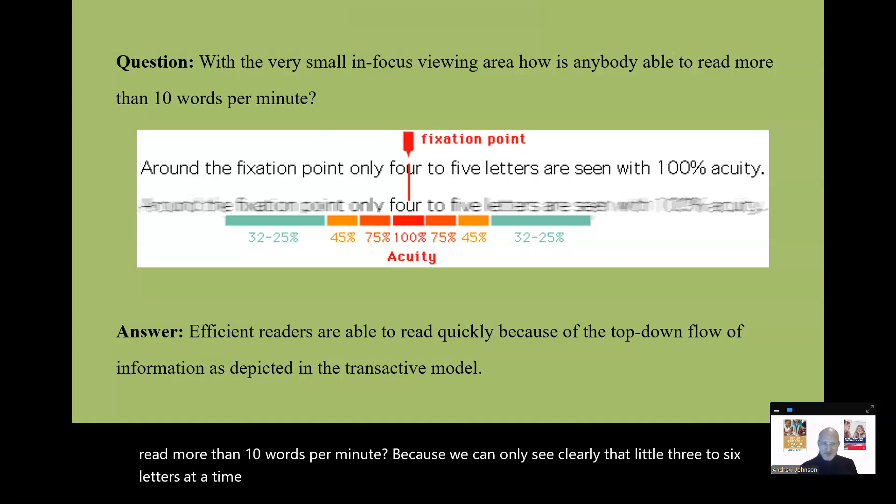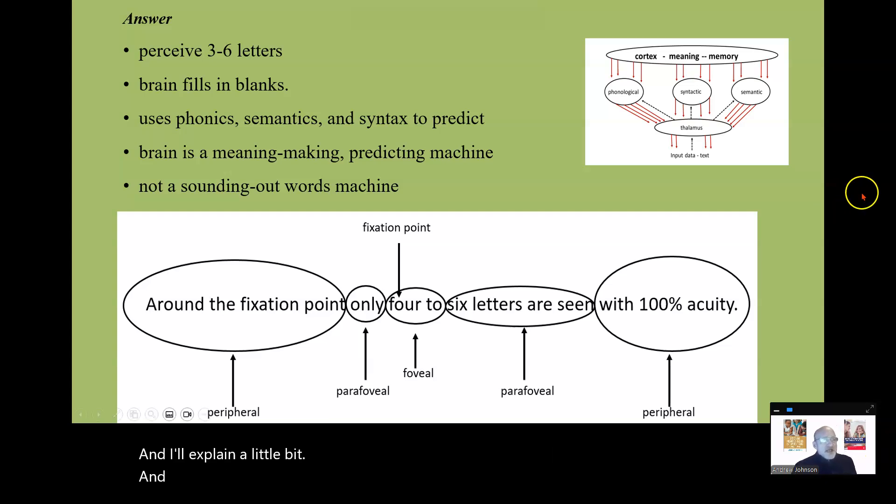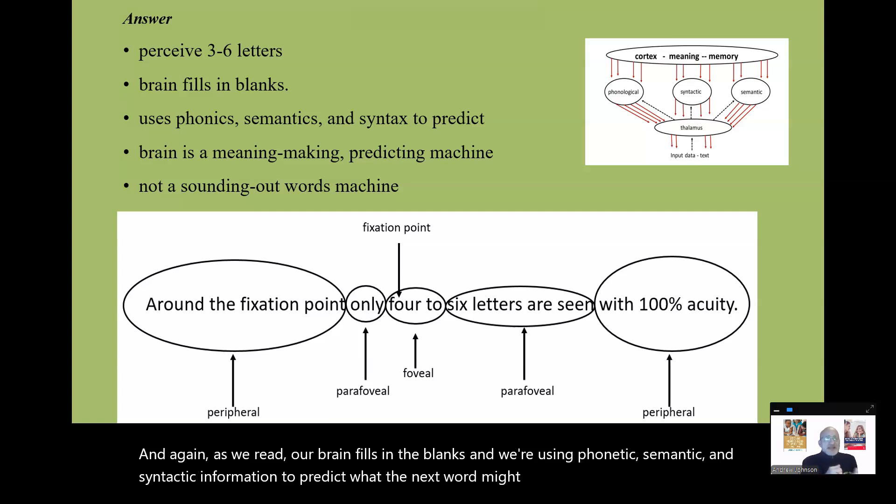And here's the answer. It's the top-down flow of information that enables efficient readers to read quickly and efficiently. And I'll explain a little bit. And again, as we read, our brain fills in the blanks. And we're using phonetic, semantic, and syntactic information to predict what the next word might be. The brain is a meaning-making machine, a predicting machine, not a sounding-out words machine.